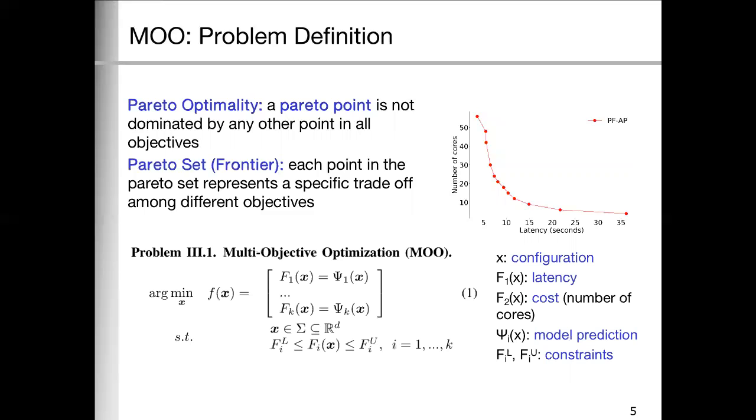We have the formal definition as such. In this particular example, the X are the Spark parameters to be set. Collectively, we call them configuration. And F1 is the latency, F2 is the cost. Psi is the model prediction. And we want to minimize them at the same time within these constraints.